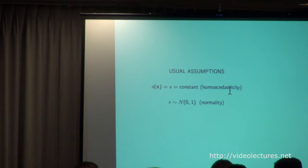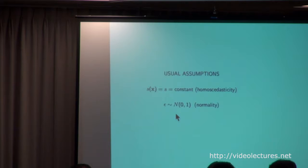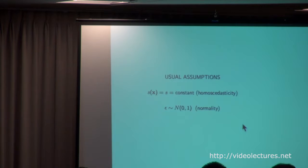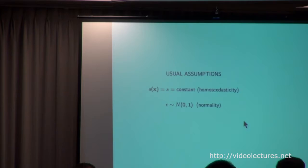The usual assumptions about the irreducible error, at least that statisticians always make, is that the scale of the error — the size of that error — is constant over all X's, and it's normally distributed. Almost all of statistics and much of machine learning is based on that. Whenever you see squared error loss, which is by far the most popular one, you are assuming this. And we will see that this is seldom ever even close to being true.